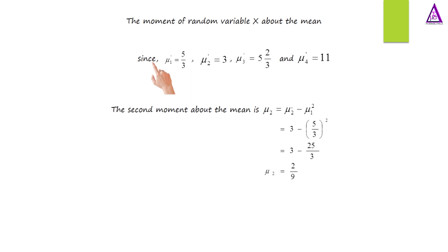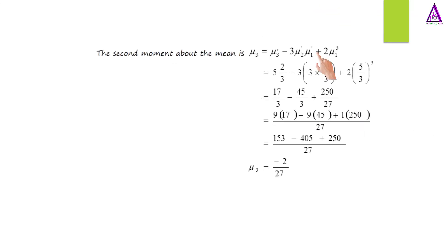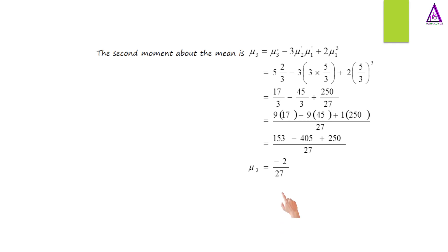The second moment about the mean is mu2, which equals the second moment about the origin minus the first moment about the origin squared. This gives 3 minus (5/3) squared, which equals 3 minus 25/9. Therefore, the second moment about the mean equals 2/9. The third moment about the mean equals 17/3 minus 3 times (3 times 5/3) plus 2 times (5/3) cubed, which equals 17/3 minus 45/3 plus 250/27. Therefore, the third moment about the mean equals negative 2/27. Thank you for watching.